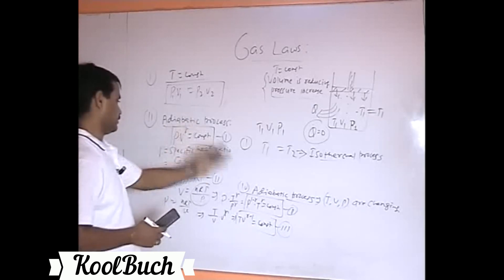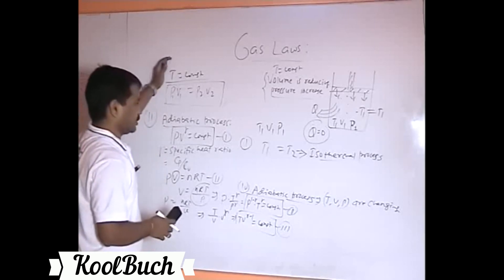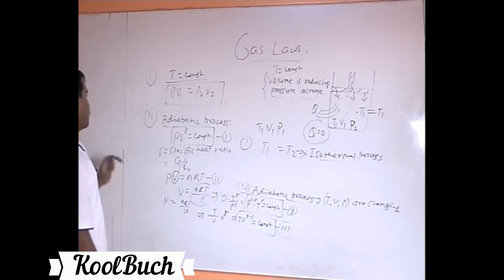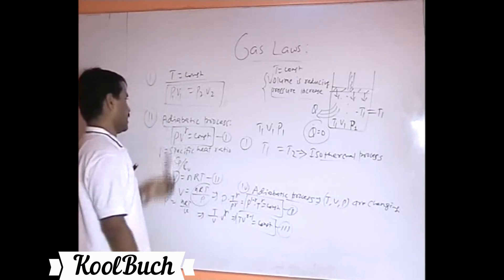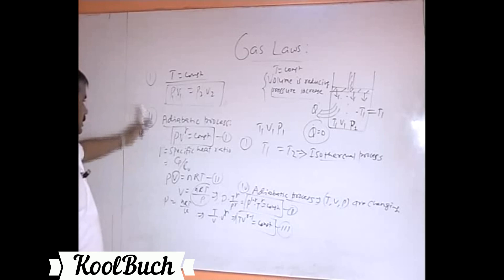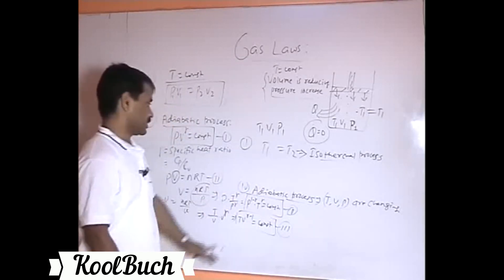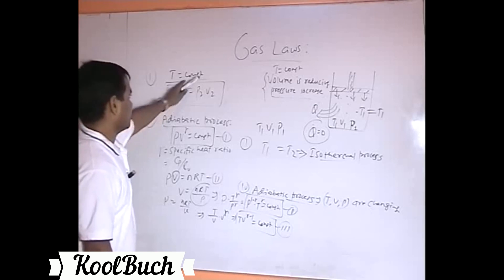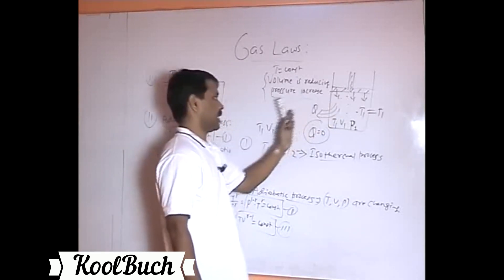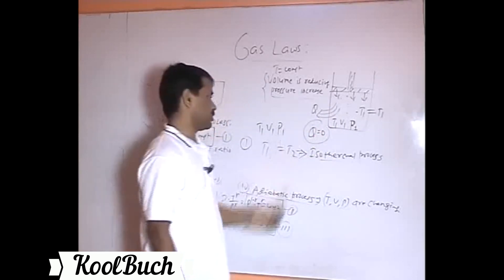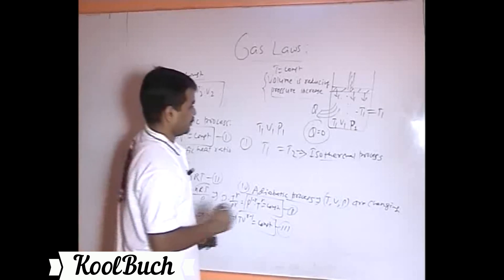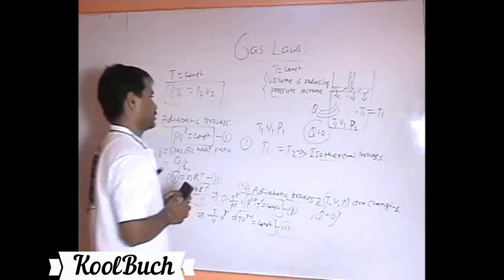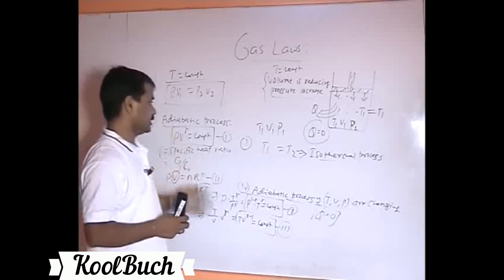To summarize the difference: in an isothermal process temperature remains constant, while in an adiabatic process temperature changes. In an isothermal process, heat exchange occurs between the system and surroundings and the system stays in equilibrium with the surroundings. In an adiabatic process, heat transfer between the system and surroundings is zero. That's how these two thermodynamic processes are defined.